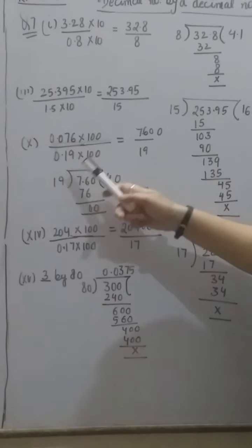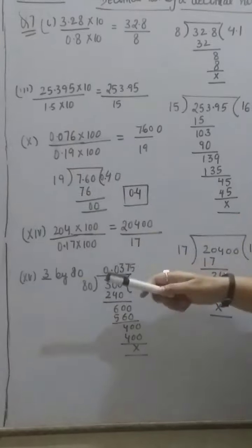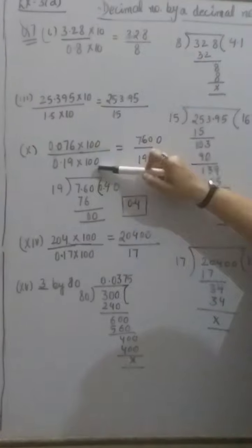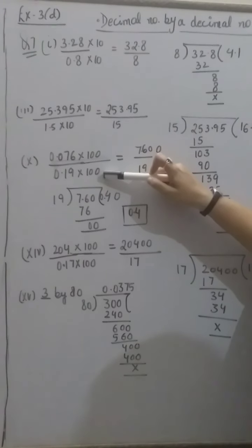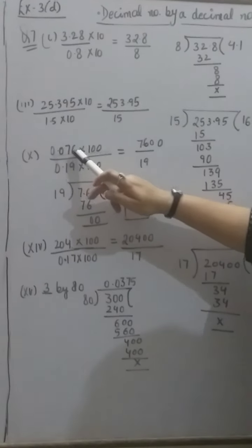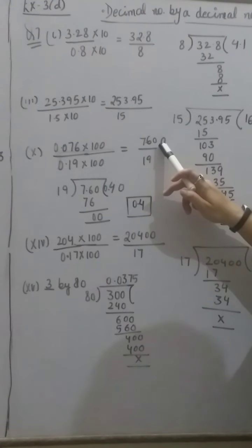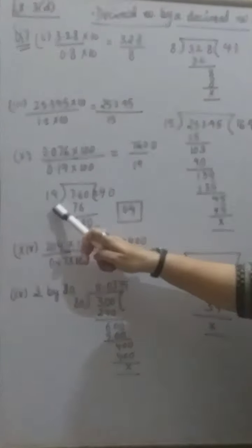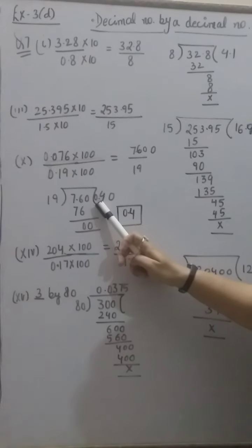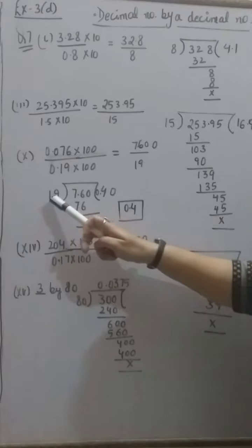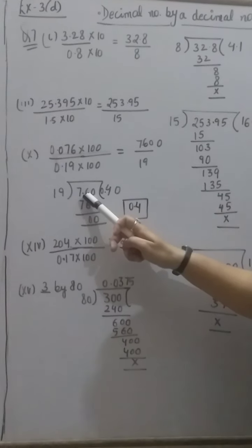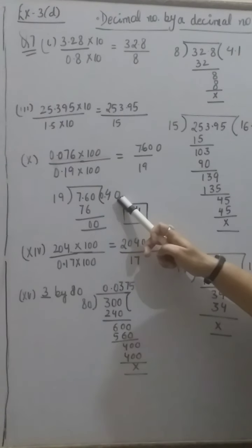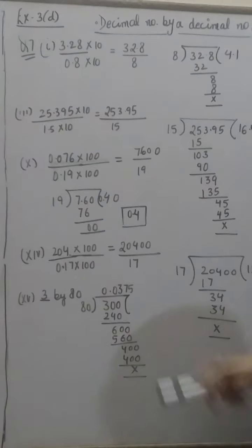10th part: 0.076 divided by 0.19. The divisor has two decimal places, so we multiply numerator and denominator by 100. 0.076 × 100 = 7.6 and the denominator becomes 19. Dividing 7.60 by 19: 7 is less than 19, so we bring down 6; 19 fours are 76. Our answer is 0.40, which can also be written as 0.4.